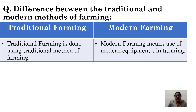In traditional farming, bullocks were used, more people were needed, and it involved more hard work. But in the modern method, tractors and many big machines have come, with the help of which farmers can produce a good yield in very less time.